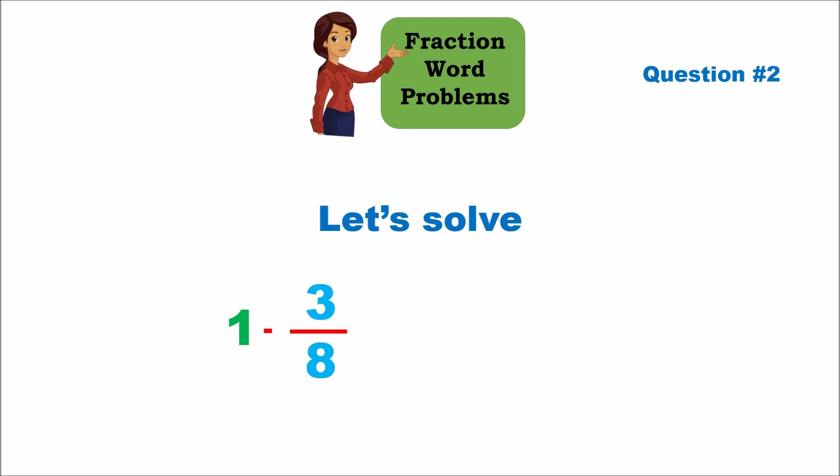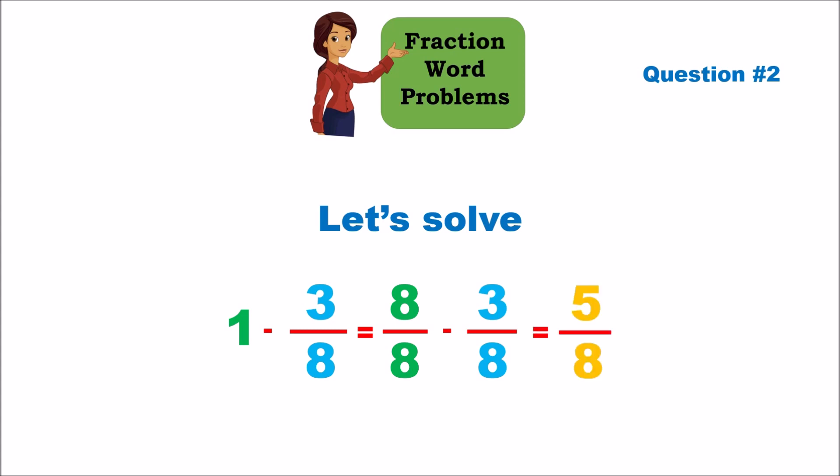Because the denominators are different — 1 and 8 — we can't do straight subtraction. We multiply the first fraction's numerator and denominator by 8, giving eight over eight. Now we have eight over eight minus three over eight, and we can do straight subtraction: 8 minus 3 is 5. The answer is five-eighths. So three-eighths of the staff is male and five-eighths is female.